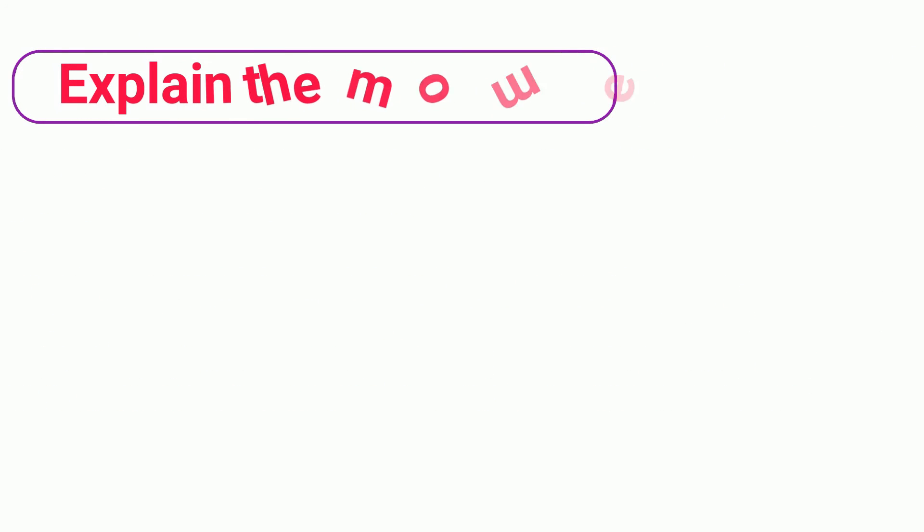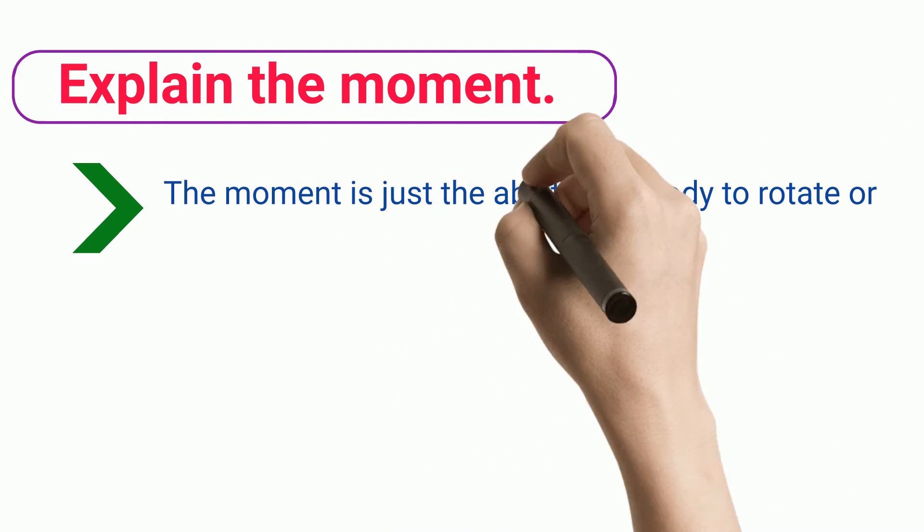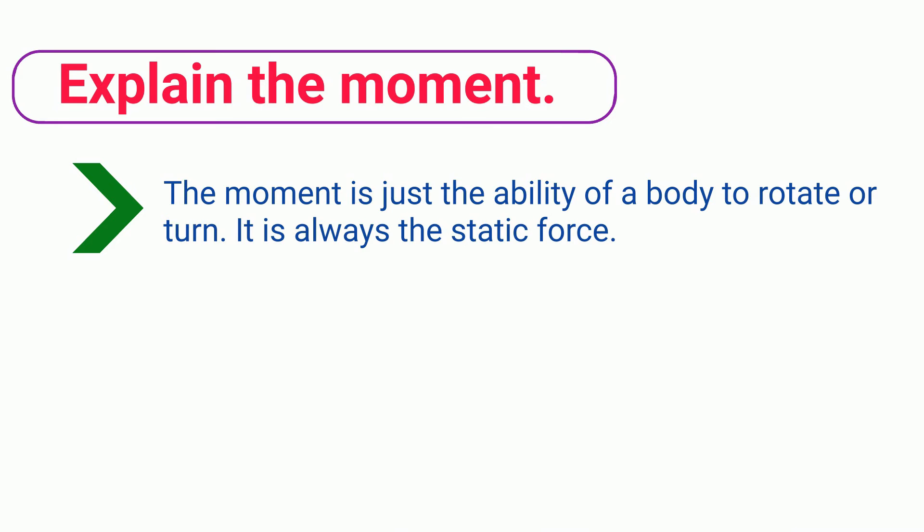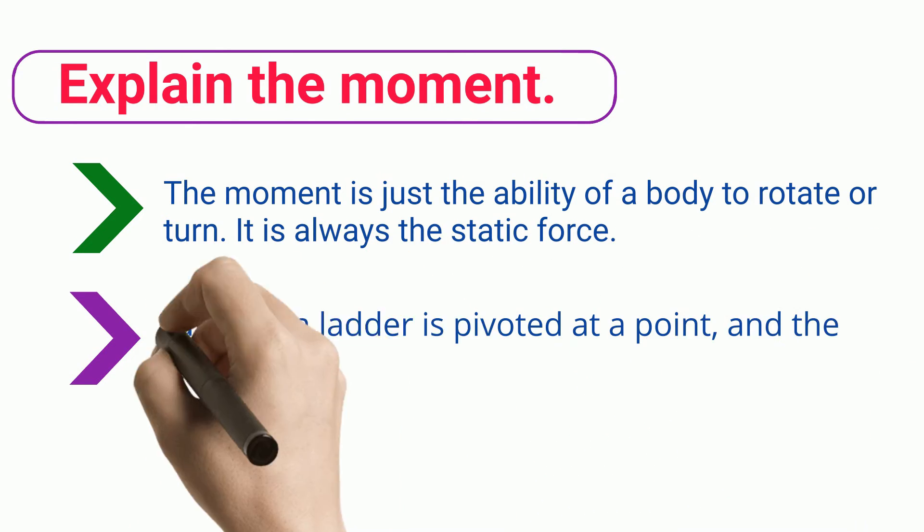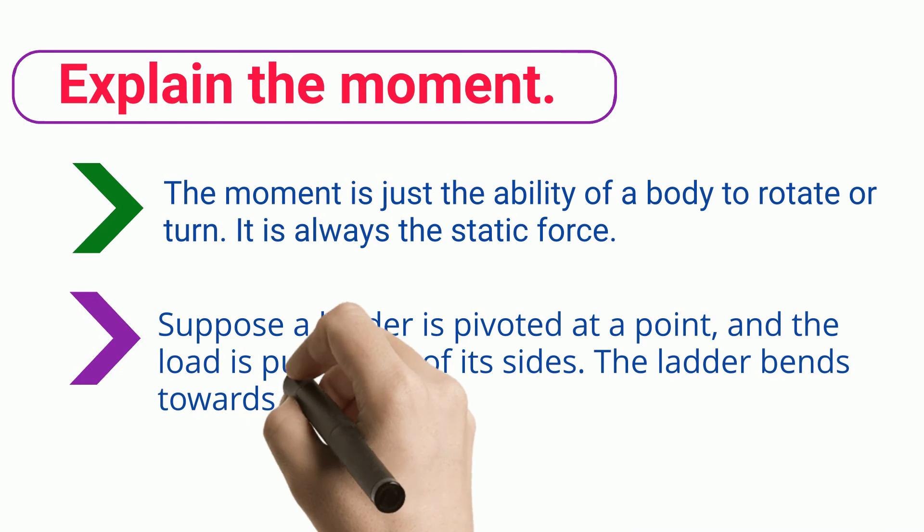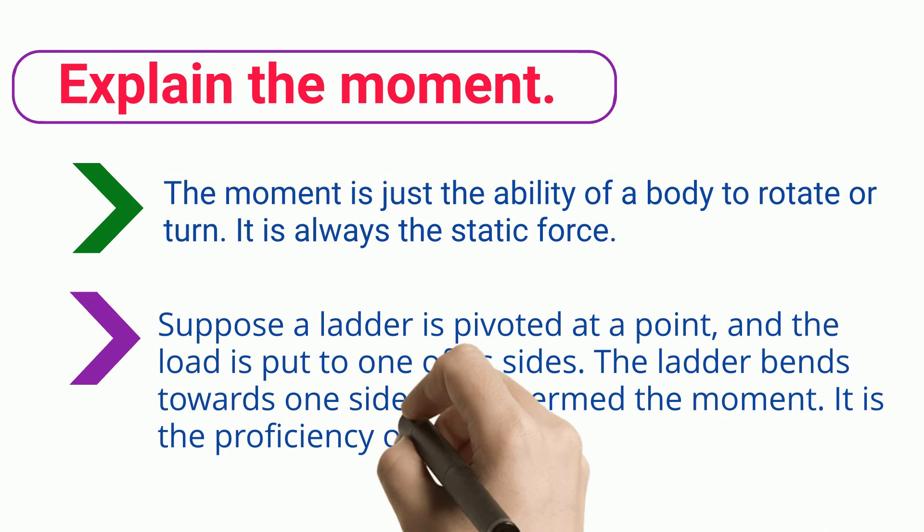Explain the moment. The moment is just the ability of a body to rotate or turn. It is always the static force. Suppose a ladder is pivoted at a point and the load is put to one of its sides. The ladder bends towards one side. This is termed the moment. It is the proficiency of a subject to rotate.